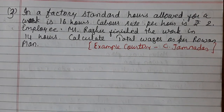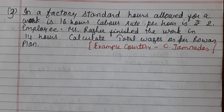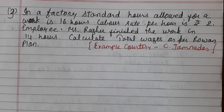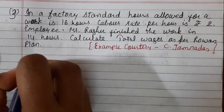Let us read it out first. In a factory, standard hours allowed for a work is 16 hours. Labour rate per hour is rupees 2. Employee Mr. Raghu finished the work in 14 hours. Calculate total wages as per Rowan plan.